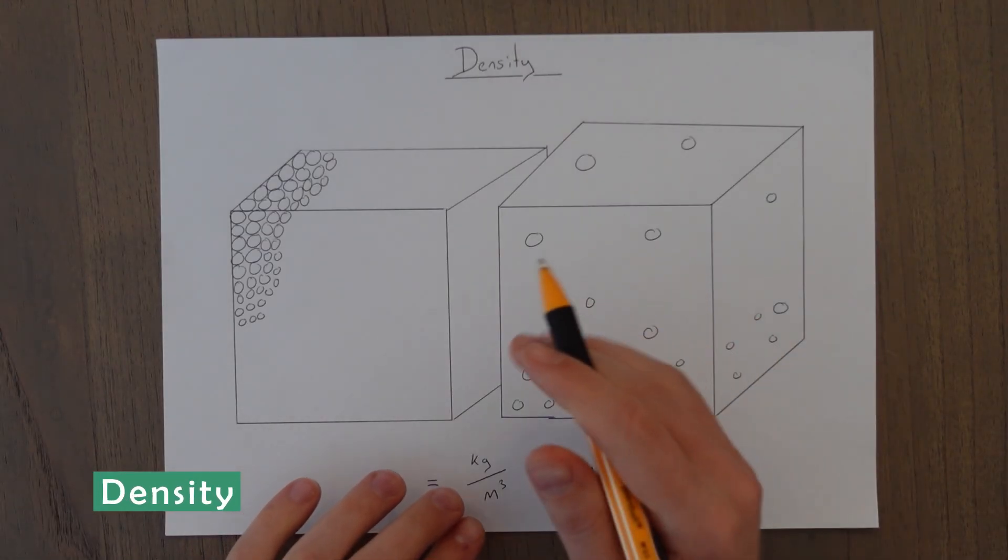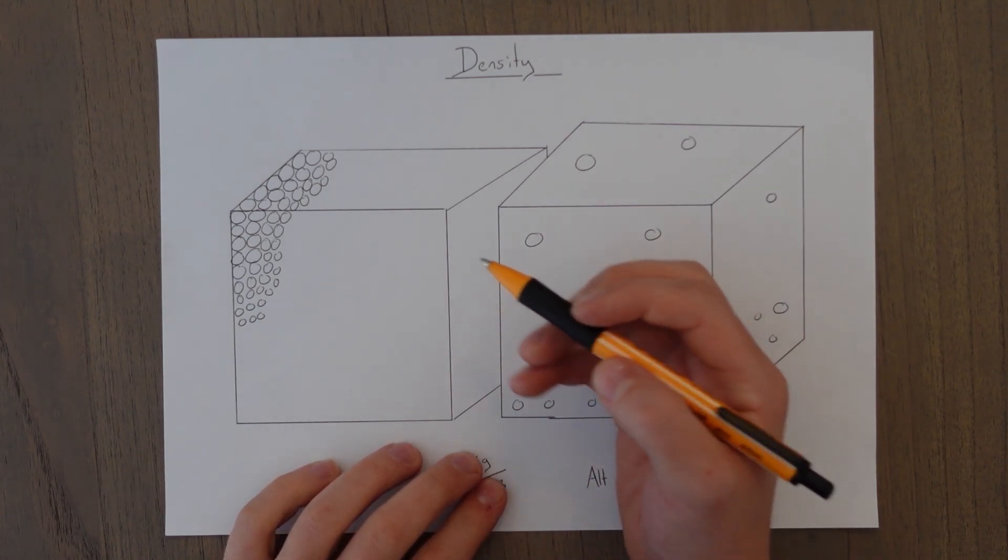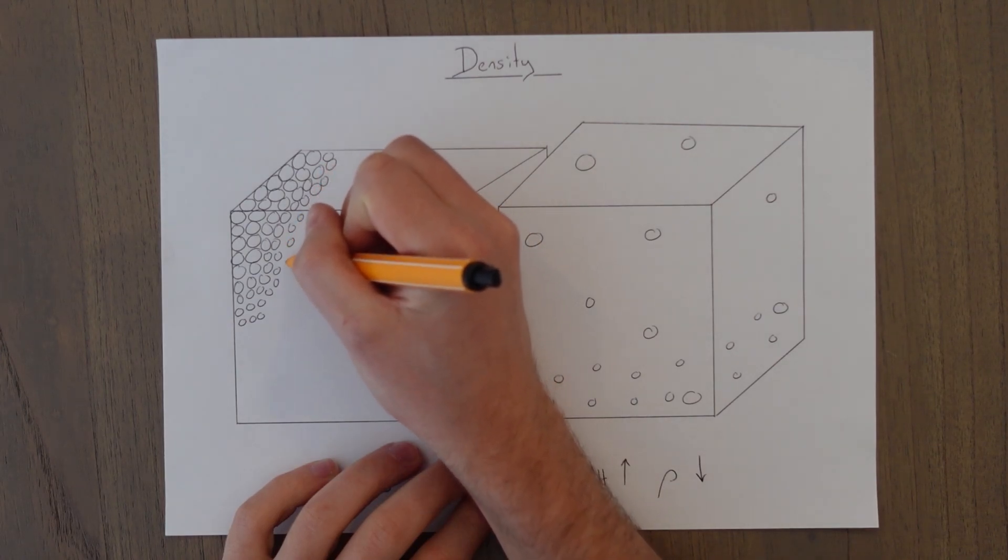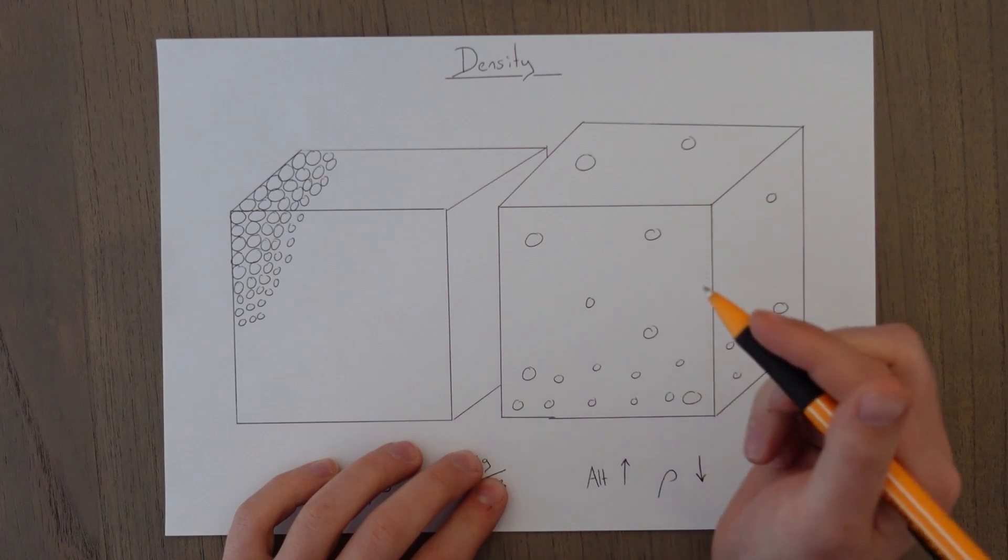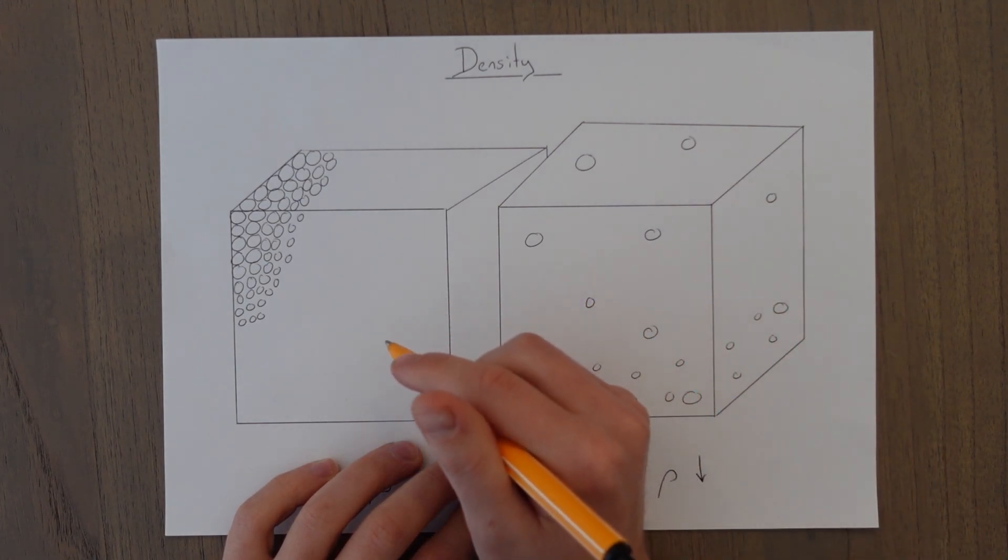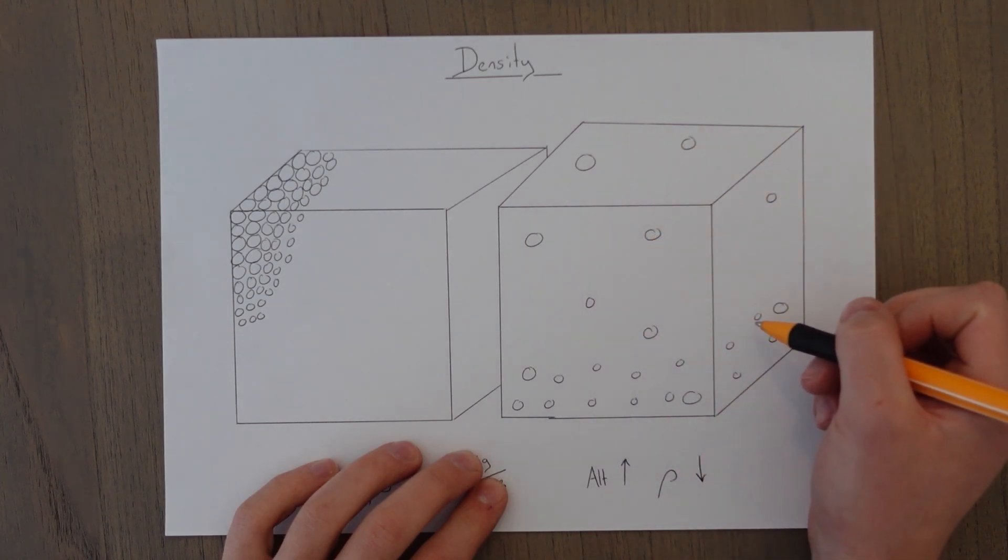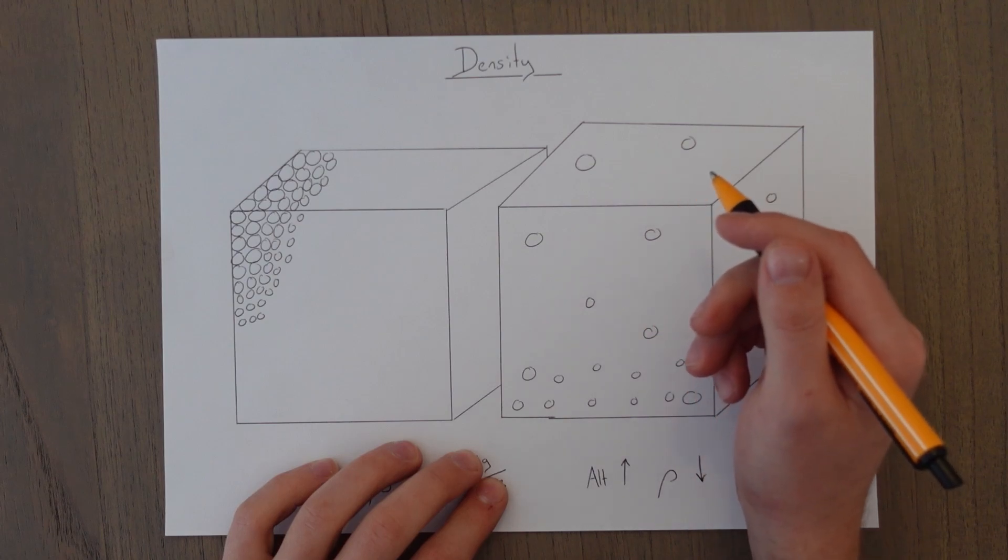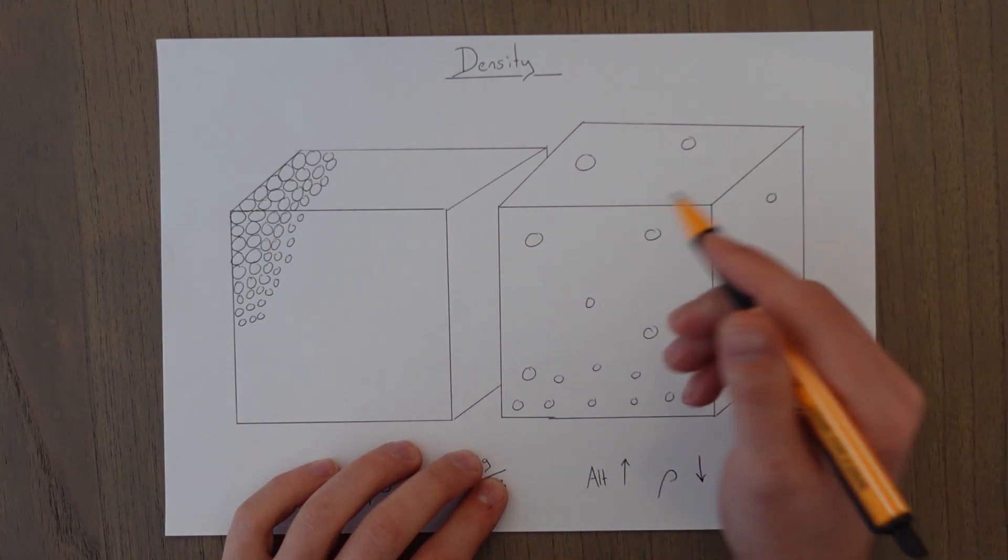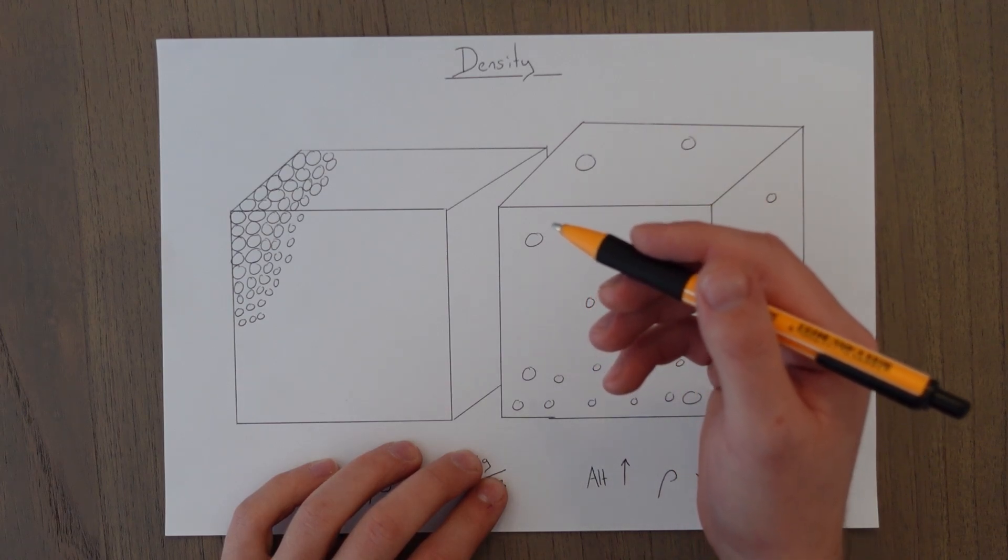When we're measuring the mass of a solid object, it's fairly straightforward because all the molecules here are packed in close together. So to gather them all up and find out the mass is very straightforward. However, in the air around us, the molecules are all spread out. So to gather them all up and find out the mass of every individual molecule would be very difficult to do. So in this case, we use the measure of density.